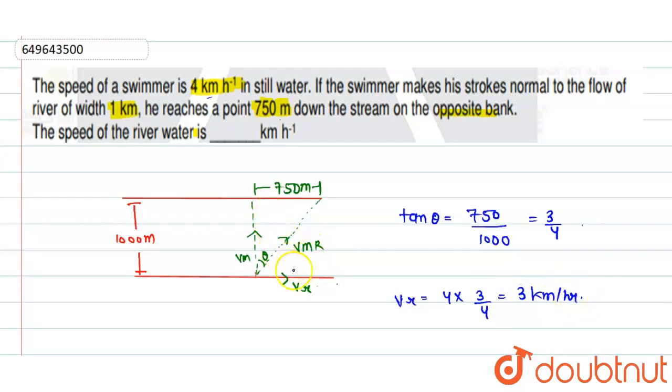The water was horizontal in this direction, so this is why the swimmer is reaching 750 meters downstream. What's the velocity of water? 3 km per hour. This is our final answer for this question. That's all, thank you.